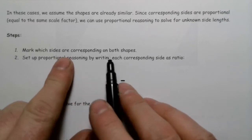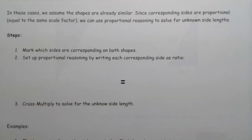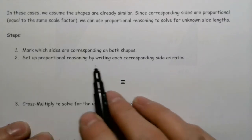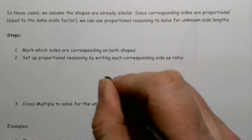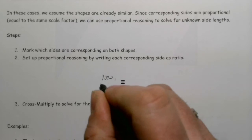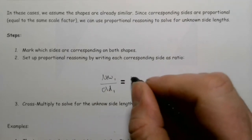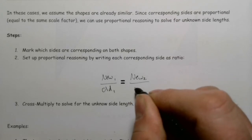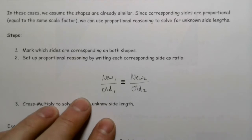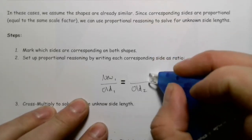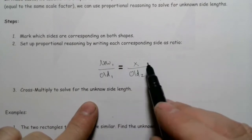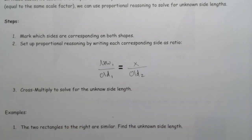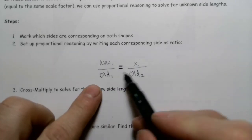Here's what we're going to do: first, we're going to identify which sides are corresponding for both shapes so we can see what the lengths are. Then we're going to set up some proportions. We should have at least one pair of corresponding sides — for example, new side one over old side one, compared to new side two over old side two. One of these will be the unknown, so that's where we put our x. To solve for x, we cross multiply and then divide — a pattern you've done a number of times already.